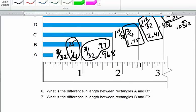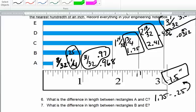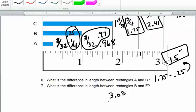So again, what is the difference in length between A and C? The difference in length, I'm going to use the decimals. A is 0.25 and C is 1.75, and that gives me an answer of 1.5 inches. What is the difference in length between B and E? 3.03 minus 0.97 gives me an answer of 2.06 inches.